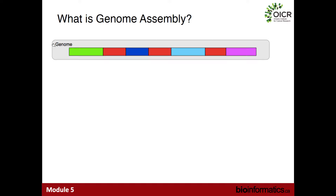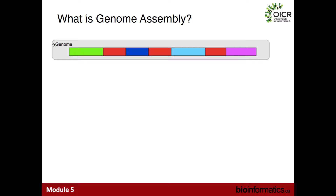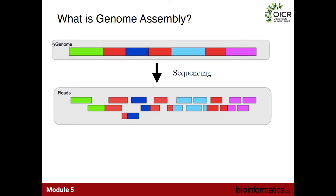So what is genome assembly? When we sequence our genome, we randomly fragment it into many pieces and put those pieces onto our DNA sequencing instrument, which determines the sequence of each individual fragment. Conceptually, the genome assembly process is quite simple: we're trying to reverse this process and take our sequence fragments and reconstruct our genome from scratch, using our individual sequencing reads and how they overlap to infer the sequence of our genome.